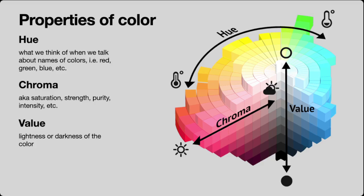Chroma, also known as saturation, strength, purity, or intensity, is the intensity of color. In an analog sense, if you were painting with watercolors, chroma would be how much pigment you have in your medium — a higher chroma of red means more pigment powder. Value is the lightness or darkness of a color; in painting, it's how much white or black paint you mix in. Something tricky is that these properties don't operate independently: adding white paint to red increases lightness but also reduces chroma, because you've diluted the pigment.